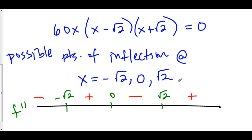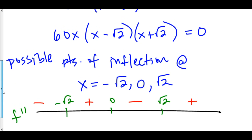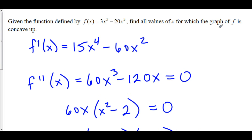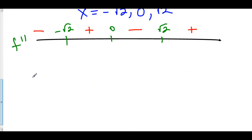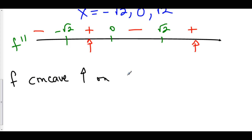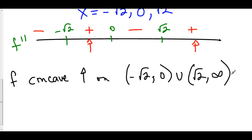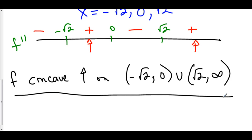All three points — -√2, 0, and √2 — are in fact points of inflection. However, we are asked to find for which values of x f is concave up. f is concave up when the second derivative is positive, which occurs between -√2 and 0, as well as to the right of √2. So f is concave up on (-√2, 0) ∪ (√2, +∞). Note that f is not concave up at -√2 itself because f double prime is zero there, not positive.